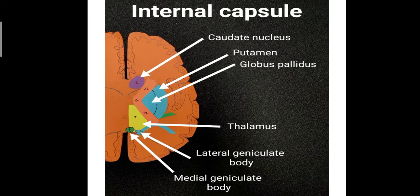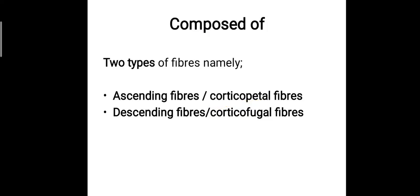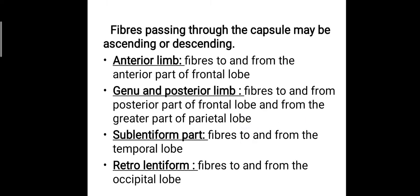The internal capsule is composed of two types of fibers: ascending fibers, also called corticopetal fibers, and descending fibers, also called corticofugal fibers. These are the two types of fibers present in the internal capsule, and fibers passing through the capsule may be either ascending or descending. In each part of the internal capsule, certain specific fibers pass through.